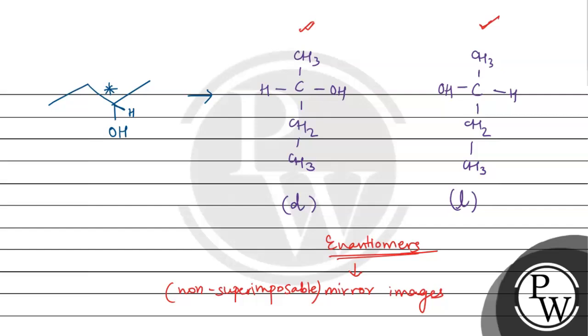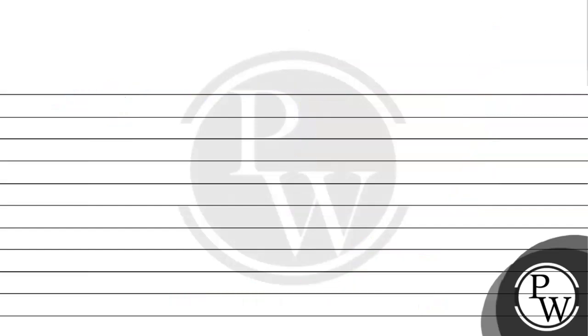That means their boiling point is the same, the mass is the same. Both D and L isomer of Butan-2-ol has same mass and therefore the same boiling point.